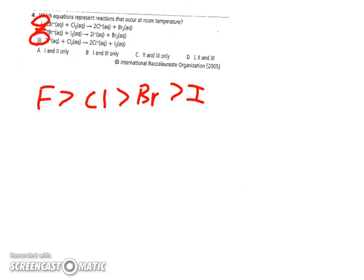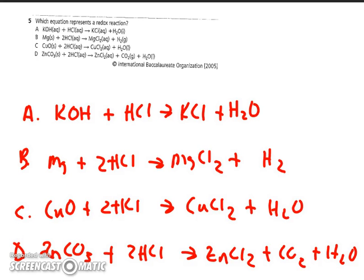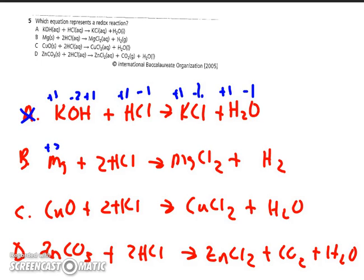Number five asks which equation represents a redox reaction. You have to assign oxidation numbers to all species to find out if both oxidation and reduction have occurred. Looking at the first reaction, potassium is plus one on both sides, hydrogen is plus one, oxygen is minus two — no oxidation or reduction occurred, so A is not a redox reaction. In the second one, Mg goes from zero to plus two, so B is a redox reaction occurring.